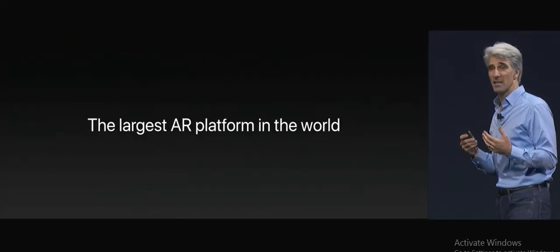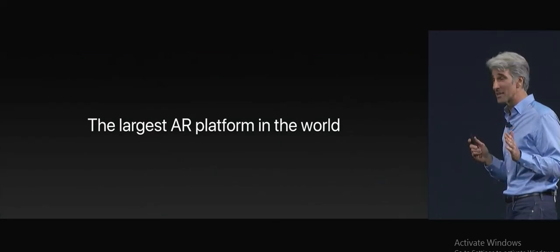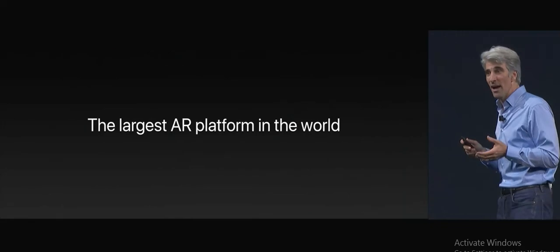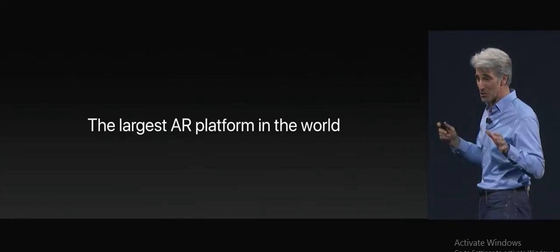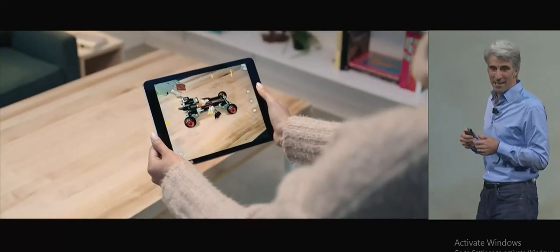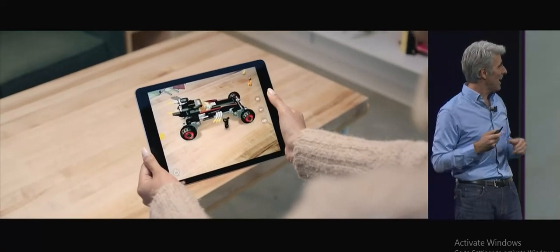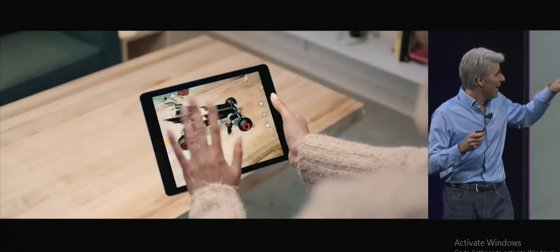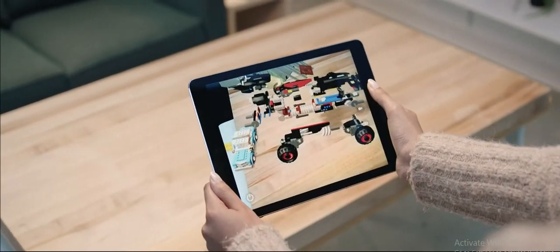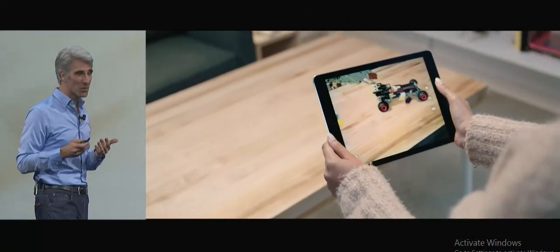We've had some third parties in to take a look at ARKit, and they are totally excited. We are just blown away by what they've been able to accomplish. IKEA is placing furniture everywhere, and it's really super awesome. But check this out — what you can do with Lego Batman. Right on the table, a Lego with a live Lego Batman, and you can explode the Lego like you can never do in the real world, pan around it, and interact with Batman right there. It's really awesome.